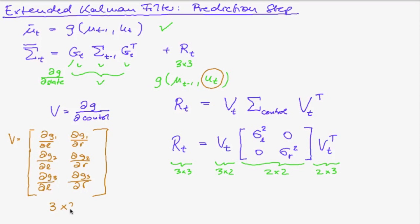So it is indeed 3 times 2. The first column being the partial derivatives with respect to l. The second being with respect to r. Now let's compute those derivatives.